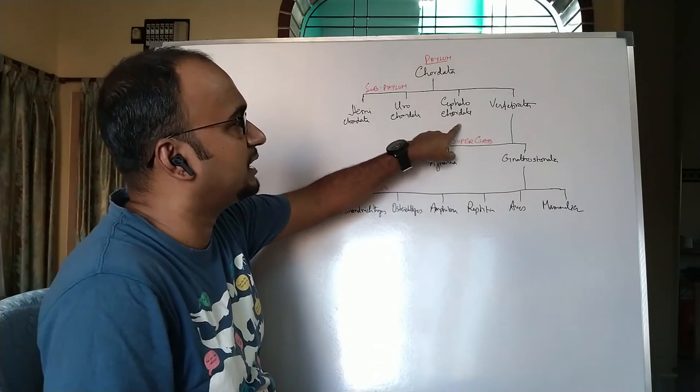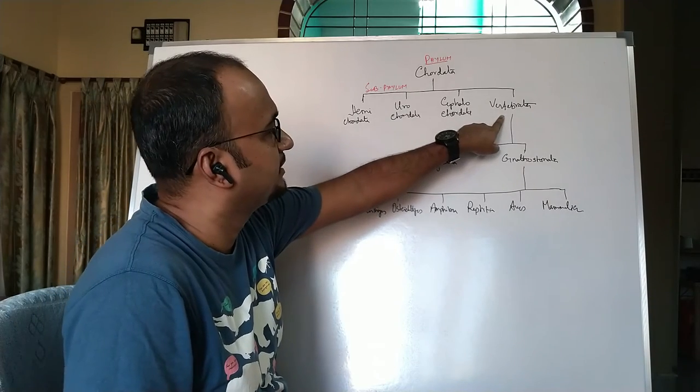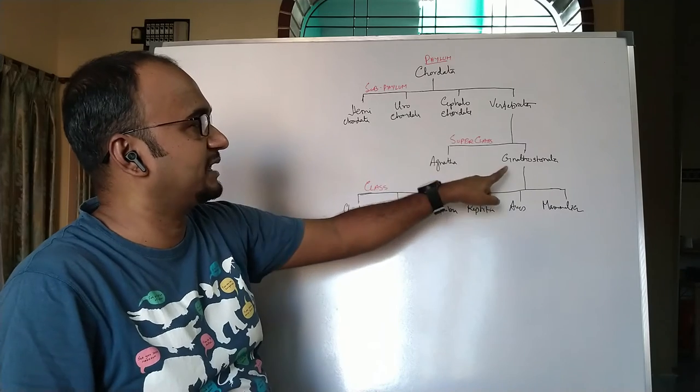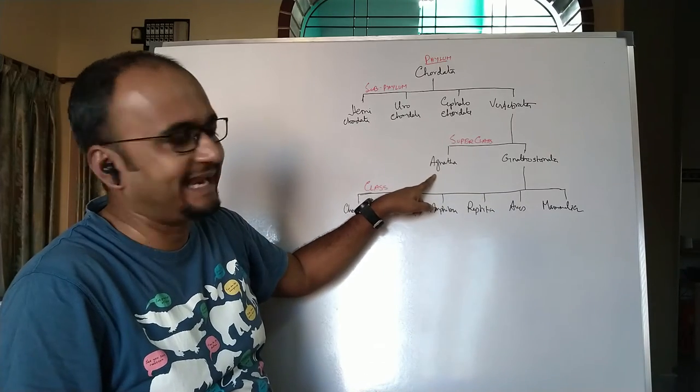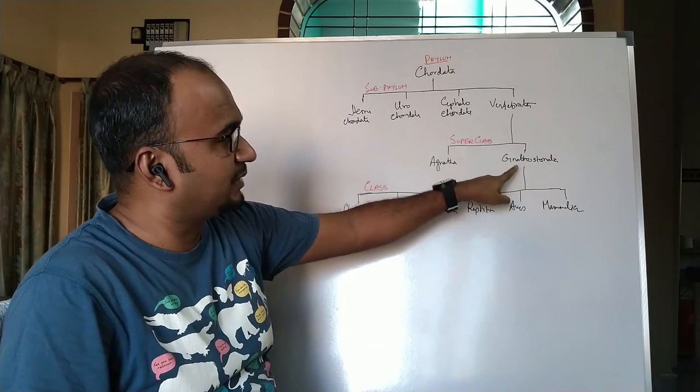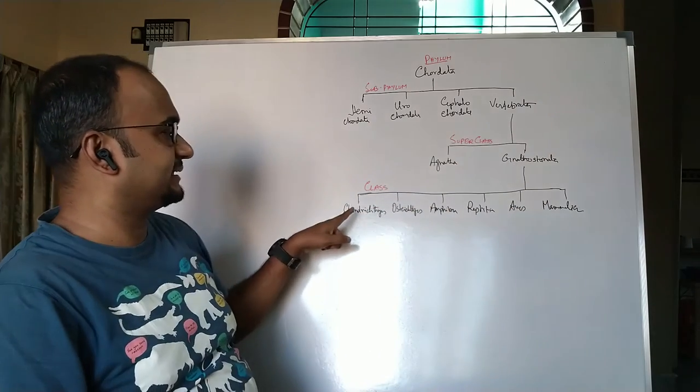Vertebrata is subdivided into two superclasses: Agnatha or Anatha and Gnathostomata. Superclass Gnathostomata is divided into six classes: